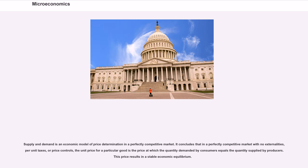Supply and demand is an economic model of price determination in a perfectly competitive market. It concludes that in a perfectly competitive market with no externalities, per unit taxes, or price controls, the unit price for a particular good is the price at which the quantity demanded by consumers equals the quantity supplied by producers. This price results in a stable economic equilibrium.